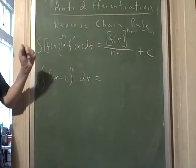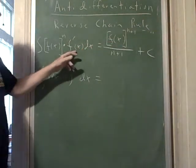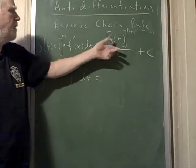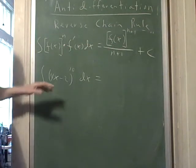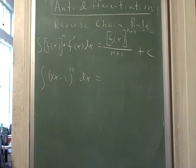we have to have f prime here, and when we get the antiderivative, this f prime disappears. Notice if you take the derivative, it will reappear. So we're going to use the reverse of the general power rule.